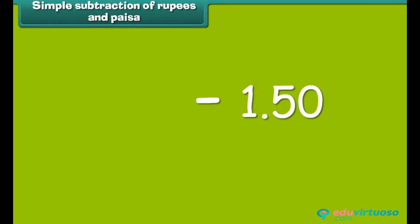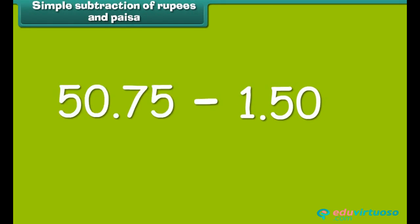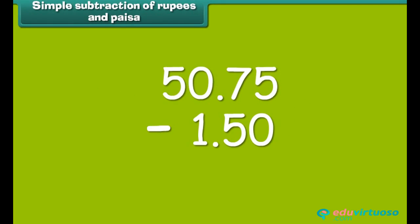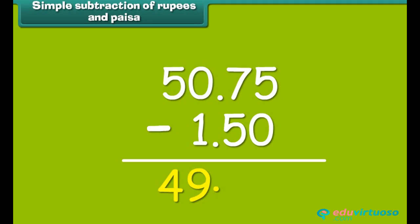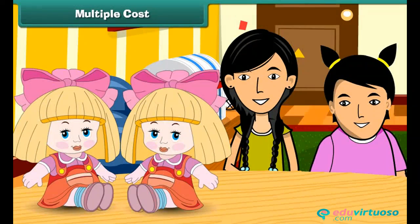Subtraction of rupees and paisa is simple. Subtract 1 rupee 50 paisa from 50 rupees 75 paisa. We first subtract the numbers in the paisa column and then in the rupee column. So the answer is 49 rupees and 25 paisa.